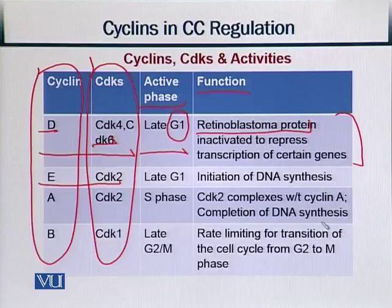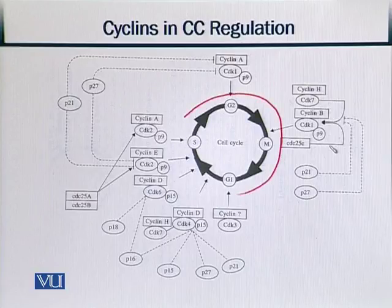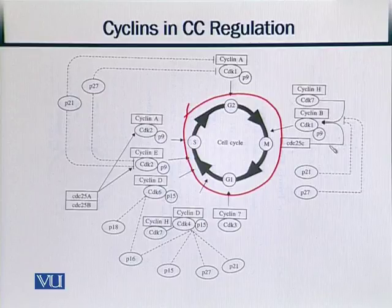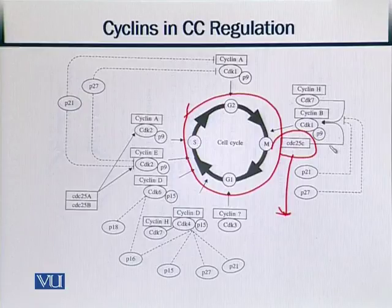Another figure is presented to explain these relationships further. This figure shows the cell cycle phases — M, G1, G2, and S. One important element here is CDC25C, which is basically called an activator of CDKs. As we can see, there are different CDKs shown, and CDC25C acts as their activator.